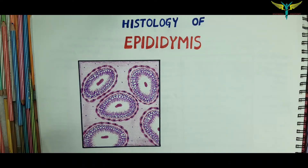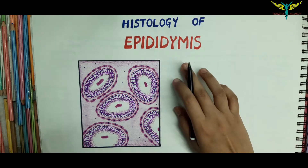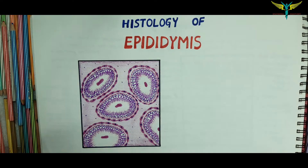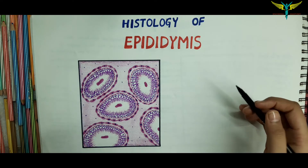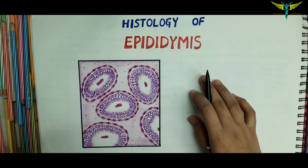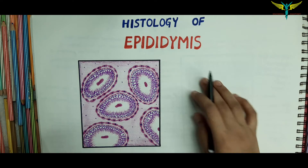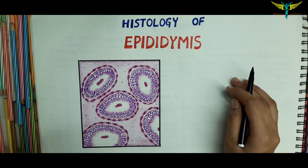In this video, let's learn about the epididymis. The epididymis is a comma-shaped structure that is present on the posterolateral aspect of the testes.